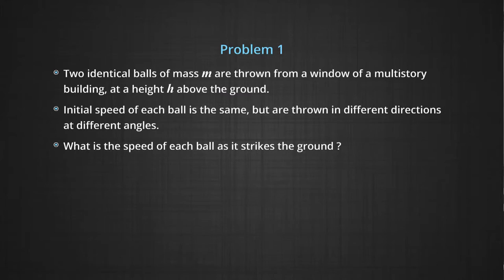The first example is of two identical balls projected from a tall building with the same initial velocity. The projection can be in any direction — it could be angular, horizontal, or any way you like — but the initial velocity must remain the same, and they should be projected from the same height. The question is: what will be the velocity with which each ball strikes the ground?